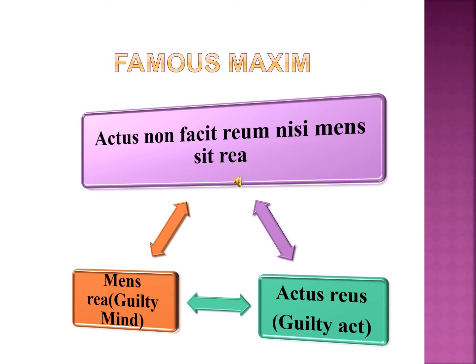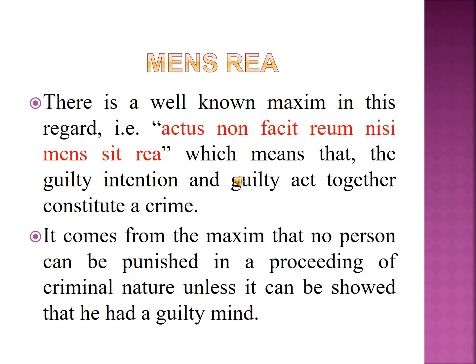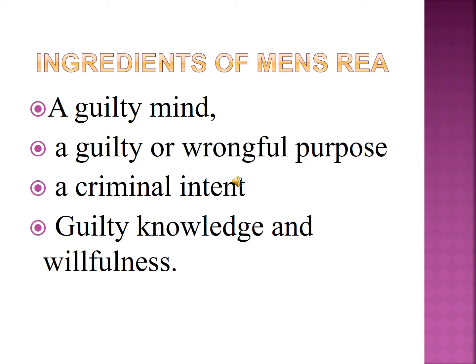The second and third elements of crime are derived from the famous maxim 'actus non facit reum nisi mens sit rea', which is divided into two parts: the first is mens rea, which means guilty mind, and the second is actus reus, which means guilty act. This means that guilty intention and guilty act together constitute a crime. No person can be punished in a proceeding of a criminal nature unless it can be shown that he had a guilty mind.